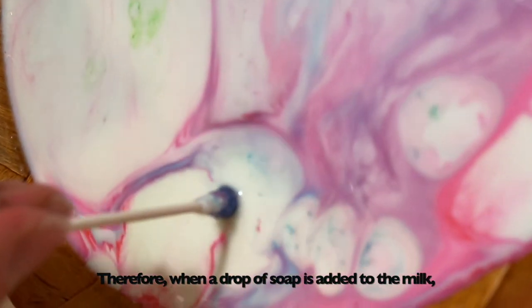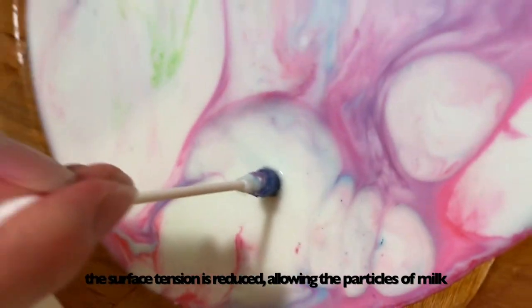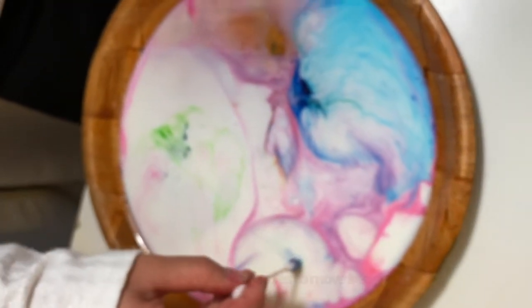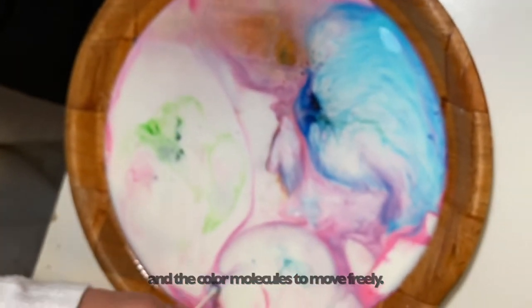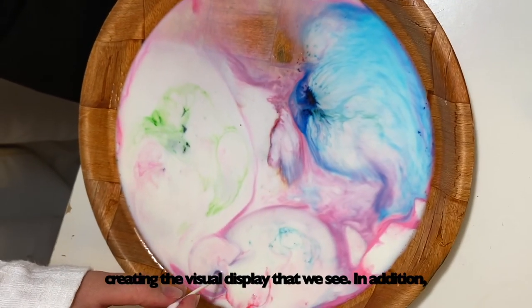Therefore, when a drop of soap is added to the milk, the surface tension is reduced, allowing the particles of the milk and the color molecules to move freely, creating the visual display that we see.